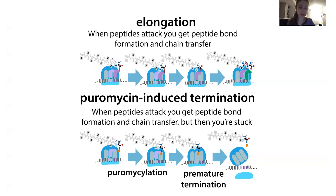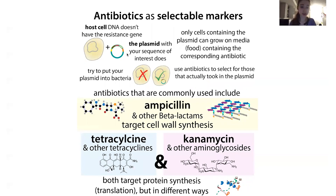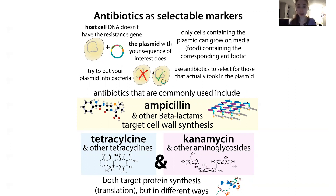You may have heard about puromycin in the context of puromycin-based selection. We've talked about antibiotic selection in bacteria — you take a plasmid, a circular piece of DNA, stick it into bacteria, and include both the gene of interest and an antibiotic resistance gene. Growing in the presence of that antibiotic means only cells with the resistance gene survive. Many antibiotics target the ribosome because protein-making is essential for survival.